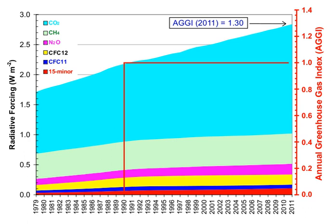Ice cores provide evidence for greenhouse gas concentration variations over the past 800,000 years. Both CO2 and CH4 vary between glacial and interglacial phases, and concentrations of these gases correlate strongly with temperature. Direct data does not exist for periods earlier than those represented in the ice core record, which indicates CO2 mole fractions stayed within a range of 180 ppm to 280 ppm throughout the last 800,000 years, until the increase of the last 250 years.